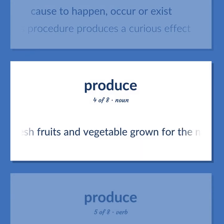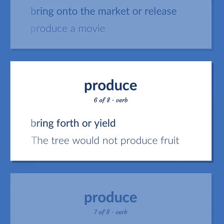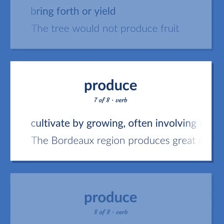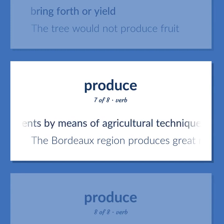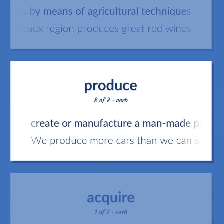Produce: Fresh fruits and vegetables grown for the market. Bring onto the market or release — produce a movie. Bring forth or yield — the tree would not produce fruit. Cultivate by growing, often involving improvements by means of agricultural techniques. The Bordeaux region produces great red wines. Create or manufacture a man-made product — we produce more cars than we can sell.